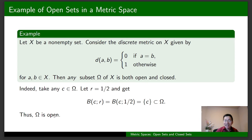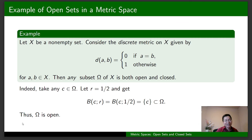Now, to show that any subset of X is closed: we have seen that any subset Omega of X is open. If we take an arbitrary set F in X, its complement is still a subset of X, and we already proved that any subset of X is open. In particular, the complement of F is open, and therefore F is closed.